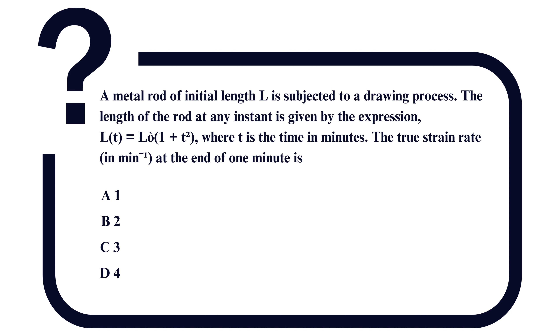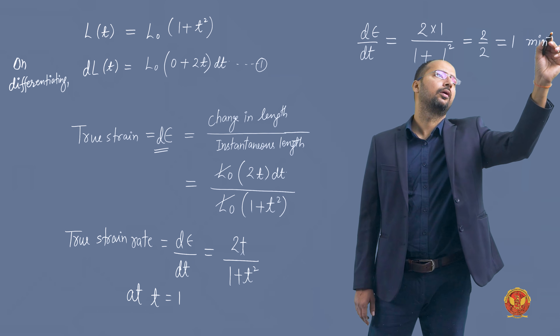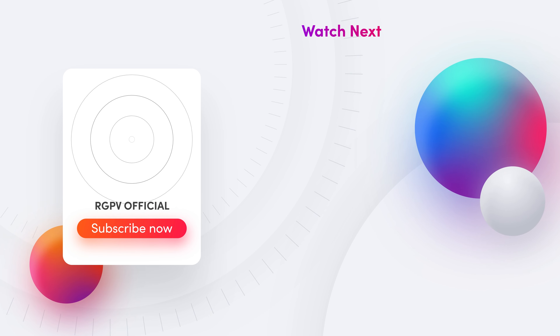So, in this question the true strain rate is asked at the end of one minute, i.e., at t = 1 minute. Substituting t = 1: dε/dt = 2 × 1 divided by (1 + 1²) = 2/2 = 1 per minute. So the true strain rate is 1 per minute, and option A is the correct answer.